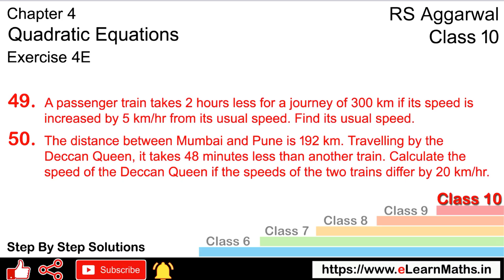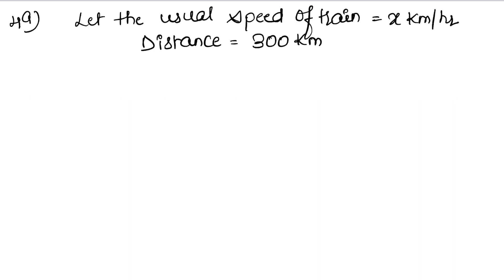The train will take 2 hours less at usual speed. The speed of the train will increase and it will take 2 hours less than usual.